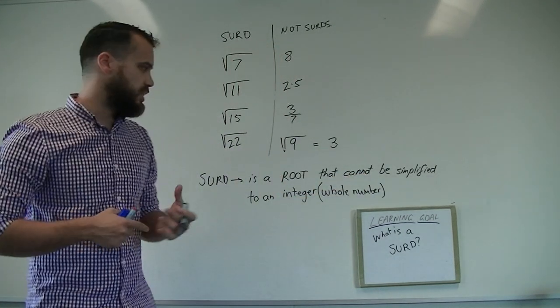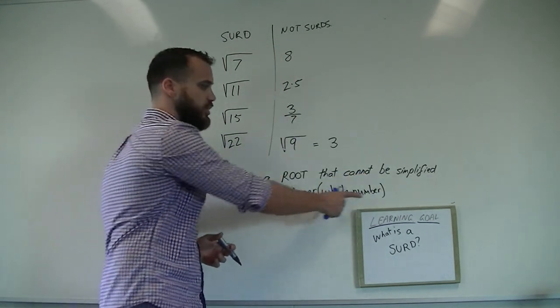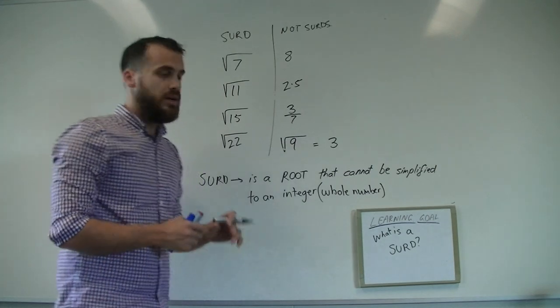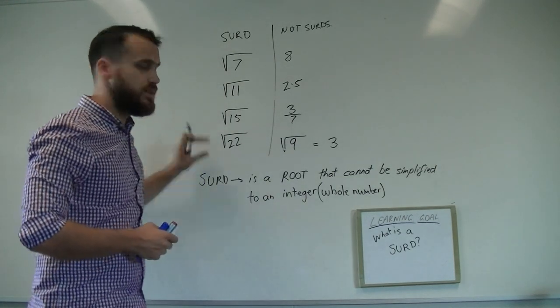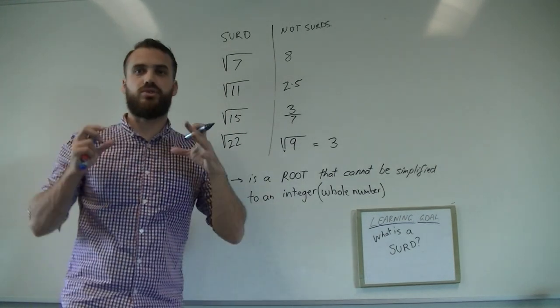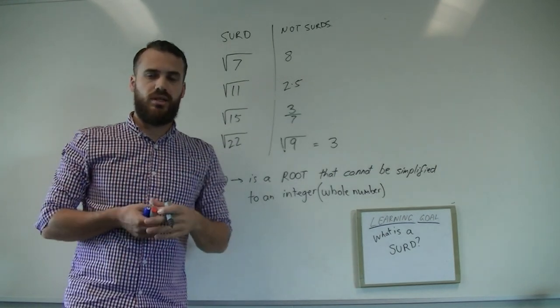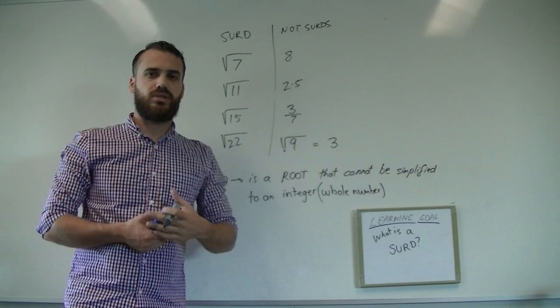So if you can't put it into your calculator and come up with a whole number, then all of these square roots are what we call SURDs. In the next few videos, we'll take a look at doing some maths with SURDs.